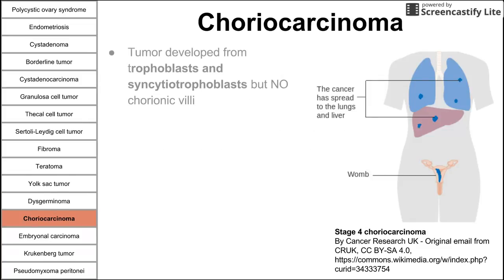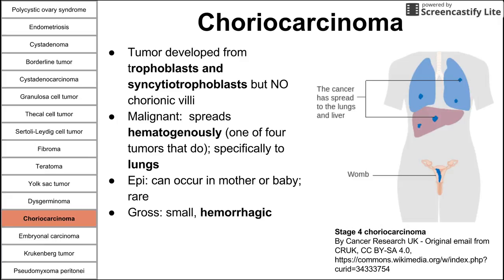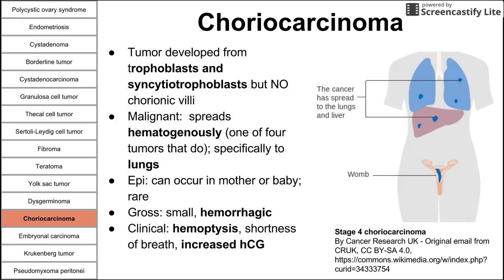Next is choriocarcinoma, a tumor developed from trophoblasts and syncytiotrophoblasts with no chorionic villi — from placental tissue. Choriocarcinomas are malignant and spread hematogenously, specifically to the lungs, which is one of four tumors known to spread this way. It can occur in the mother or baby and is a rare tumor. Grossly it looks small and hemorrhagic. Clinically, you see hemoptysis, shortness of breath, and increased HCG. Unfortunately, these are not chemosensitive.